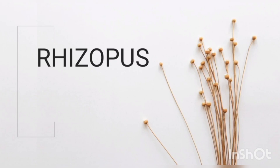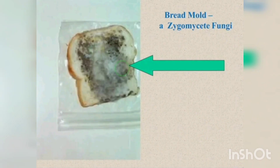Some parasites which belong to Zygomycotina attack the human body and cause mucormycosis. For example, fungi that produce black mold in human beings belong to Zygomycotina.